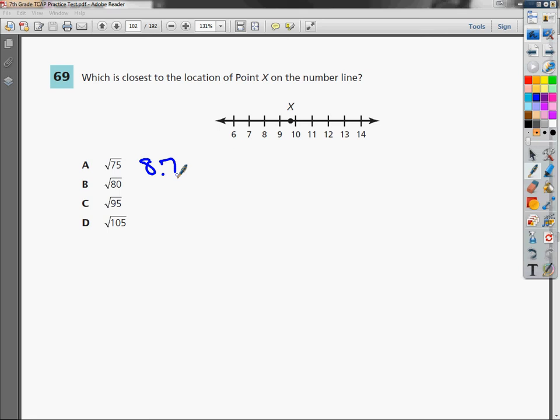Square root of 80 would give me 8.9. Square root of 95 gives me 9.7. And the square root of 105 gives me 10.2.